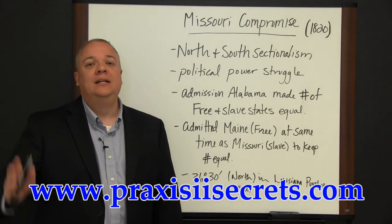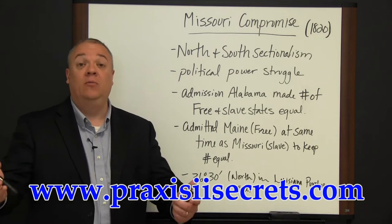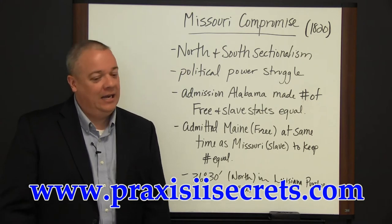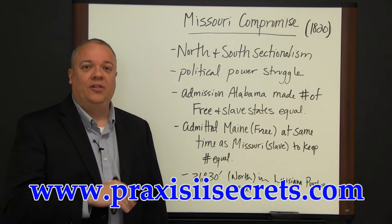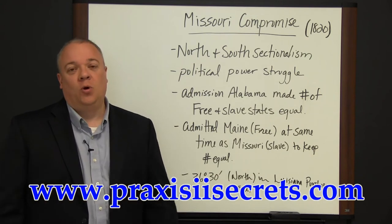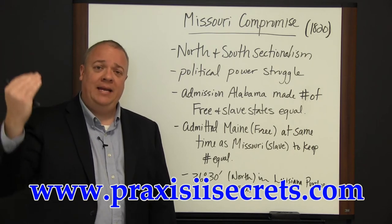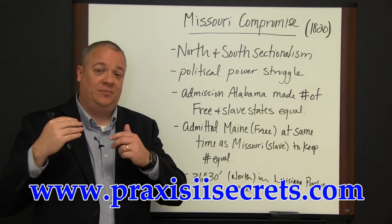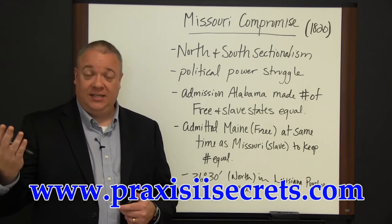At about the same time Missouri was seeking admission, Maine was also seeking admission, and Maine would absolutely come in as a free state. All politics is based on compromise — if people have to share power, some have to give something up in order to work together. So this compromise said: at the same time that Maine comes in as a free state, we'll admit Missouri as a slave state and keep the balance — there would still be the same number of states on the free side as on the slave side.